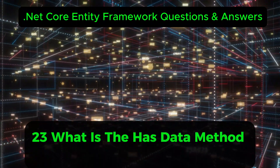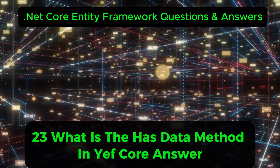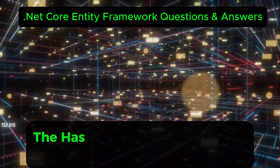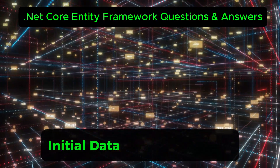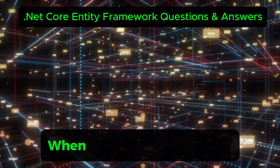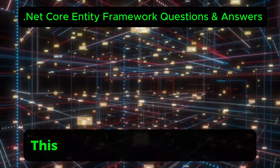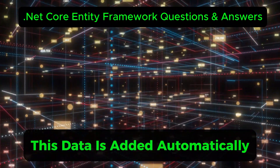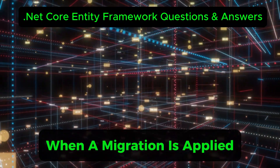What is the HasData method in EF Core? The HasData method is used to seed initial data to the database when setting up migrations. This data is added automatically when a migration is applied.